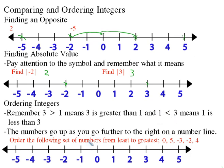So the numbers go up as you go further to the right on a number line. A number over here is going to be bigger and just keeps going. The reverse is true: as you go left on a number line, the numbers get smaller.